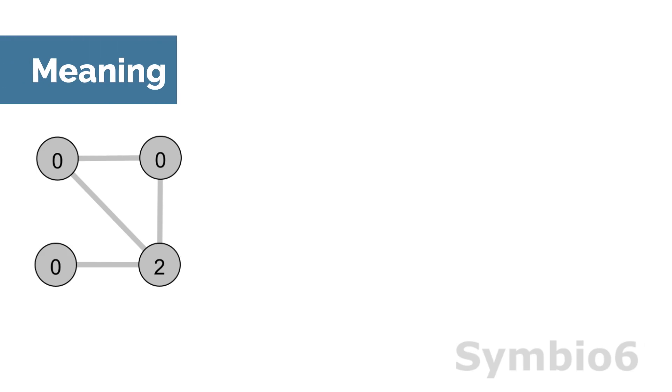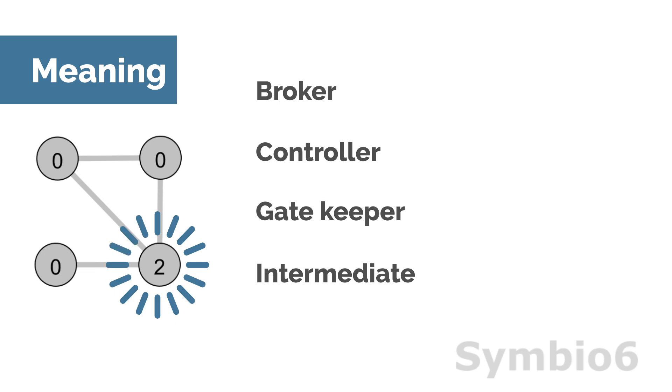For most centrality measurements, important means popular. Betweenness centrality captures a very different kind of importance, individuals controlling the flow around a network. They are also the ones whose removal from the network will disrupt interactions the most.